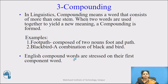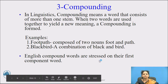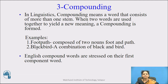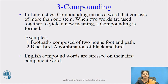English compound words are stressed on their first component word. An example is 'footpath' — in this compound word, the stress is on the first component word, that is 'foot': footpath. Or 'blackbird.' On these examples we can see that the stress is on the first syllable or on the first component word.